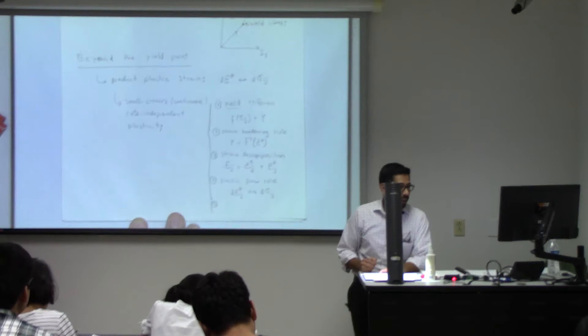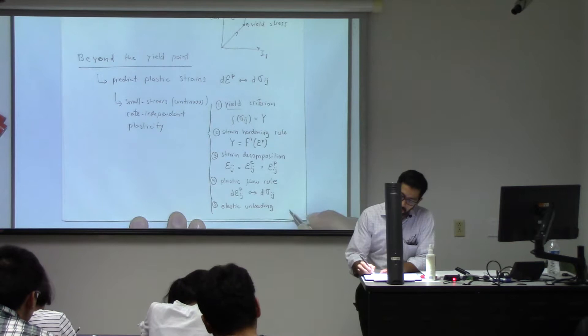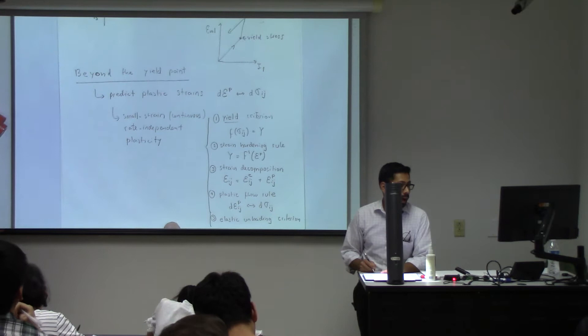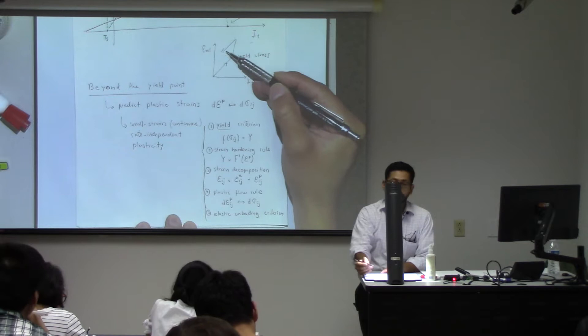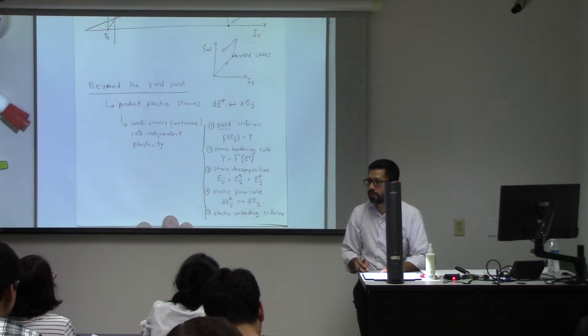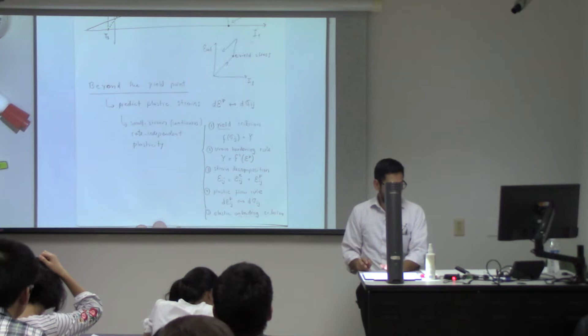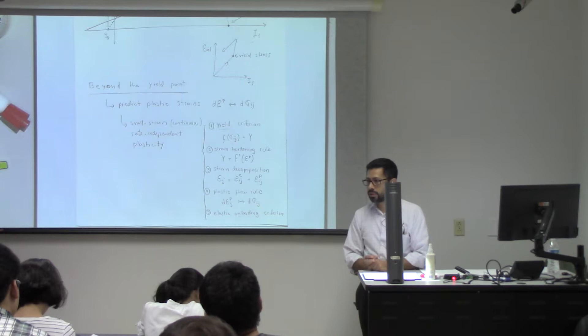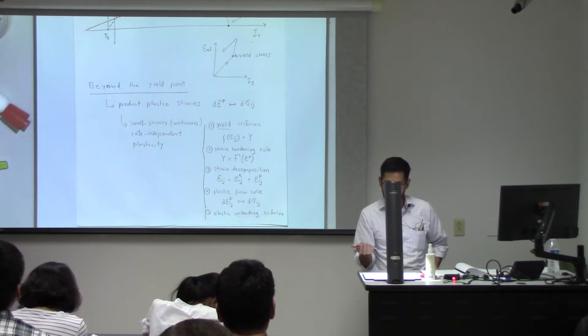The fifth key point is that we also need to make an assumption about elastic unloading. Once we go beyond the yield point, we need to know what happens when we unload — whether that unloading has the same slope as the loading or not. With all these elements, we're in condition to go into the plasticity theory and make some examples. We're going to start with the most simple example of plasticity — sometimes not very accurate, but good to get started.